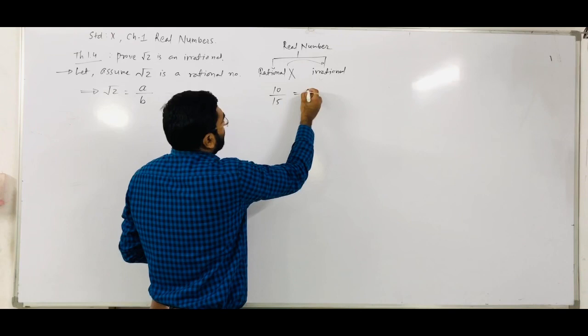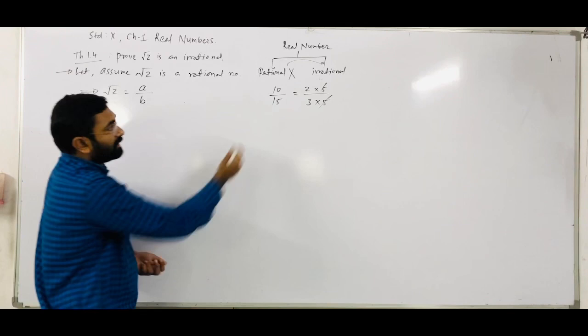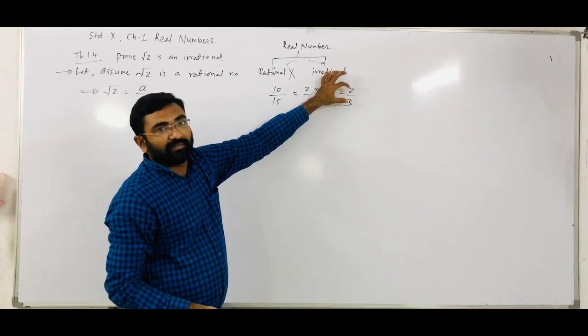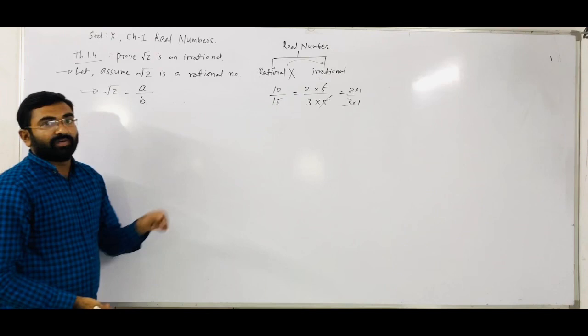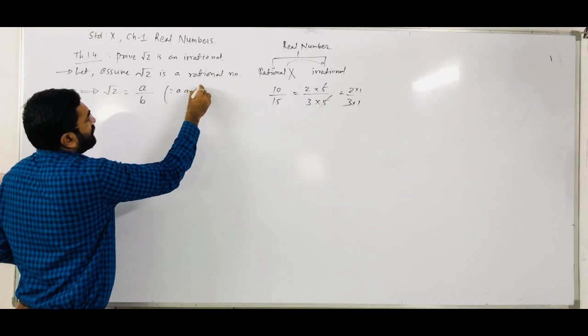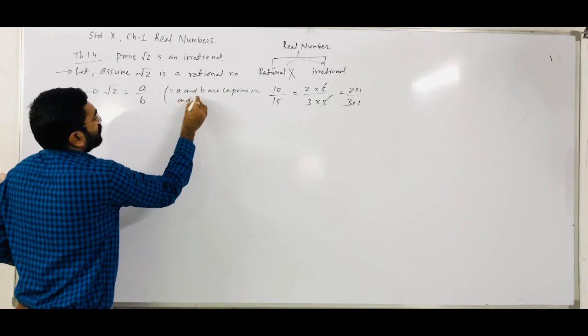For example, 10/15 — we can simplify: the 5s cancel out and we get 2/3. Here a equals 2, b equals 3. These two numbers have only one common factor which is 1 — no other common factor. So numbers having only one common factor which is 1 are called co-prime numbers. So a and b are co-prime, and denominator b is not equal to 0.